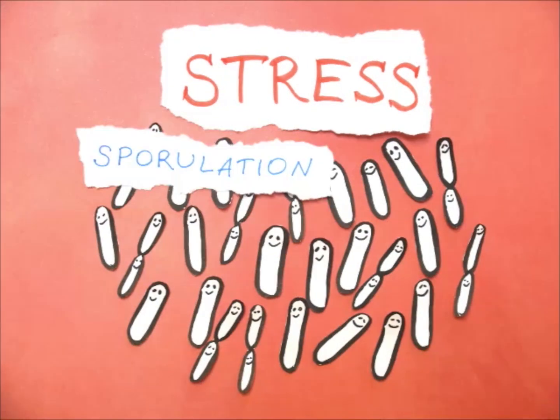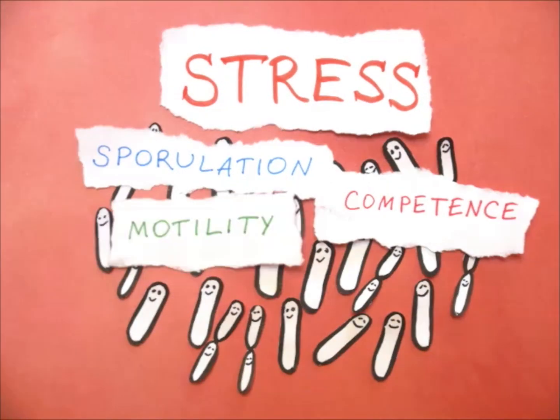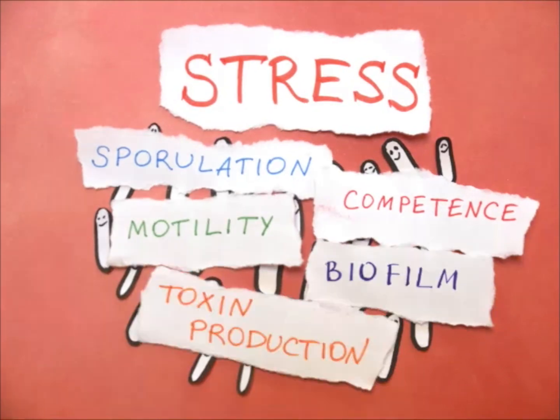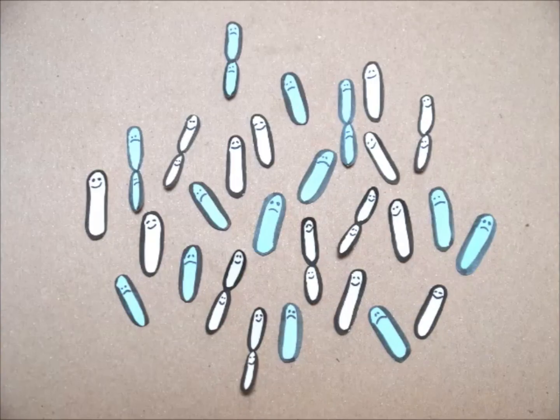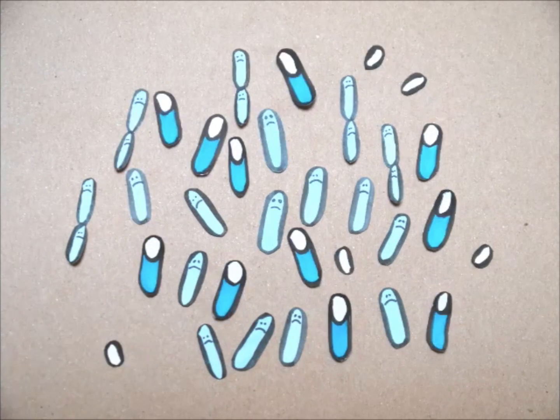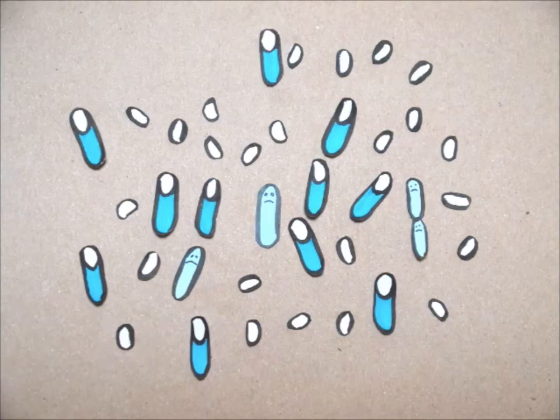What makes Bacillus a fascinating model system is the variety of behaviors that it displays under stress. For example, when food is scarce, Bacillus can turn into a spore, an extremely resistant dormant state in which they can survive for years without food.